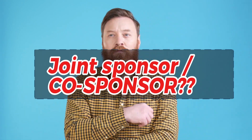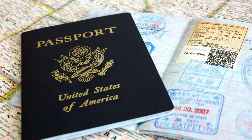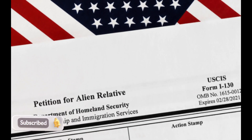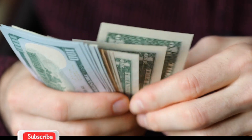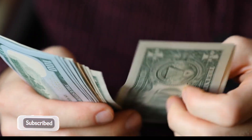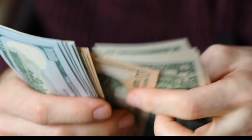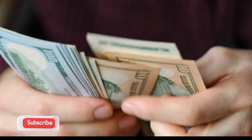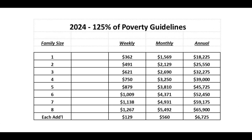Let's start by understanding what a joint sponsor and a co-sponsor mean in the context of the US spouse visa process. When you apply for a US spouse visa, the petitioner — the spouse who is a US citizen or lawful permanent resident — must prove that they meet the minimum income requirement to support the incoming spouse. This requirement is determined based on the federal poverty guidelines.